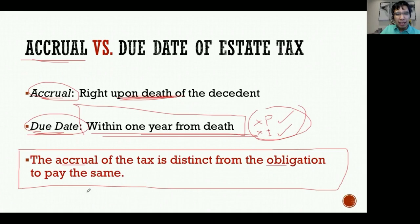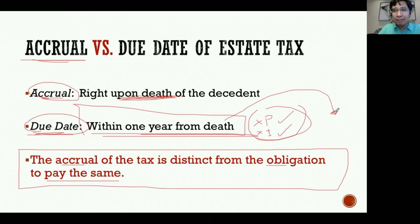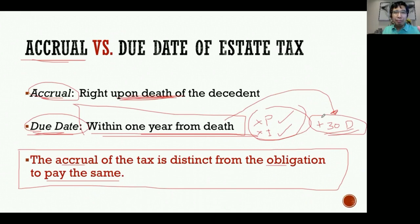Can the one-year period be extended? Under the TRAIN law, it can be extended for not more than 30 additional days, provided there is a meritorious case - a valid reason for the extension. However, it is the BIR that decides whether to allow or deny the extension. The key point is that the accrual date and the due date of the estate tax are distinct.